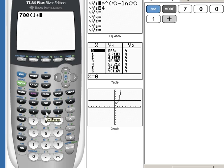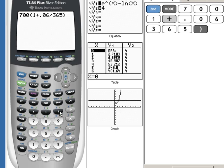In this case, it won't make any difference. The order of operations will work out correctly. So it would be 0.06 divided by 365, and then close the parentheses.